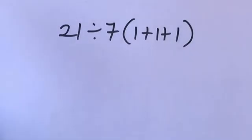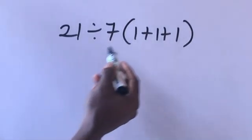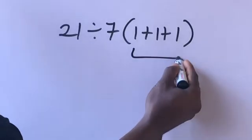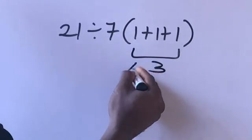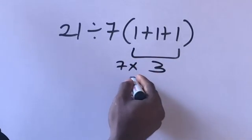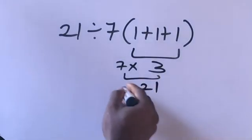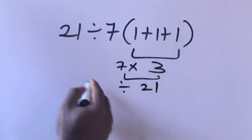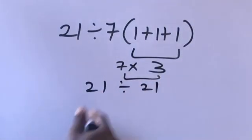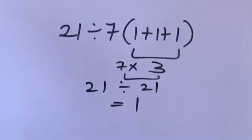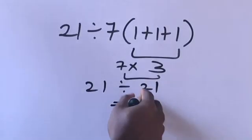Hi guys, welcome back to my channel. When you have a math problem like this, what do you do? Everything here will give us 1: 3 times 7 which is equal to 21, divide by this 21 which is equal to 1. But this answer is not correct.